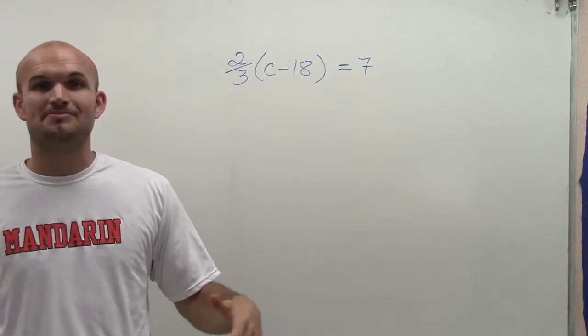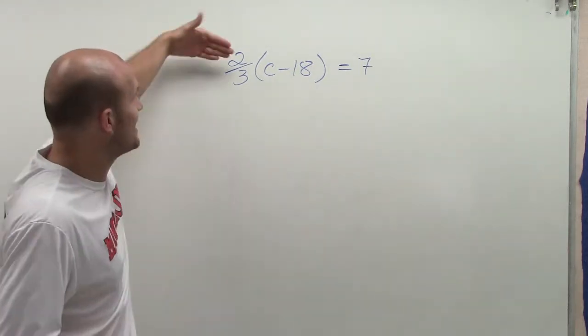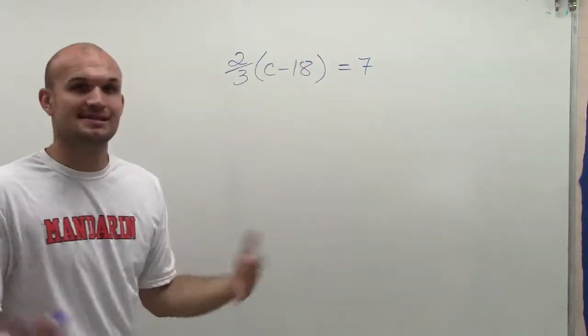So the next thing I think about is distributive property. Can I apply the distributive property in this case? I have 2/3 times c minus 18, so yes, of course.